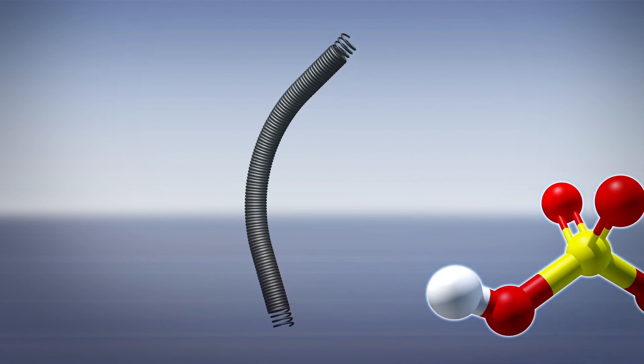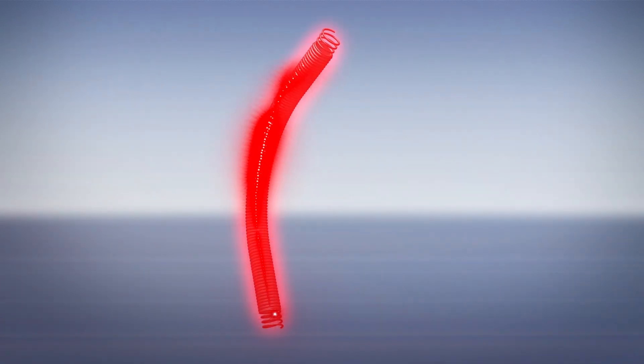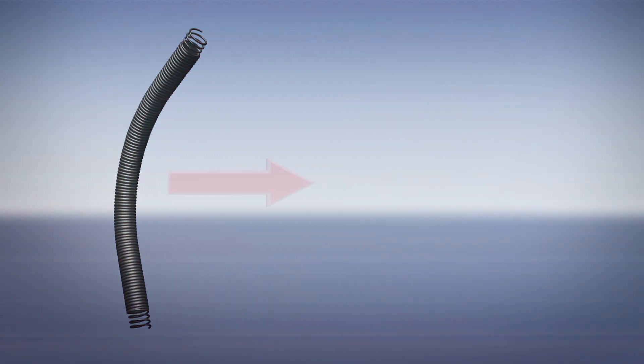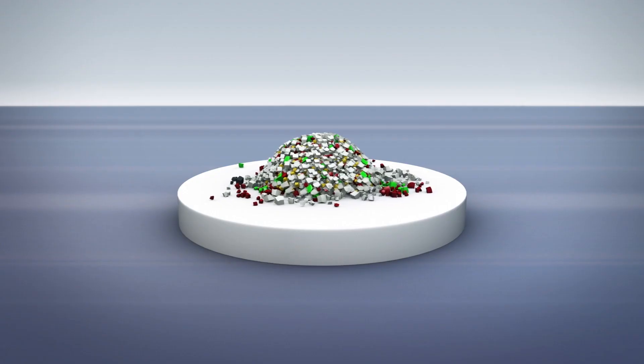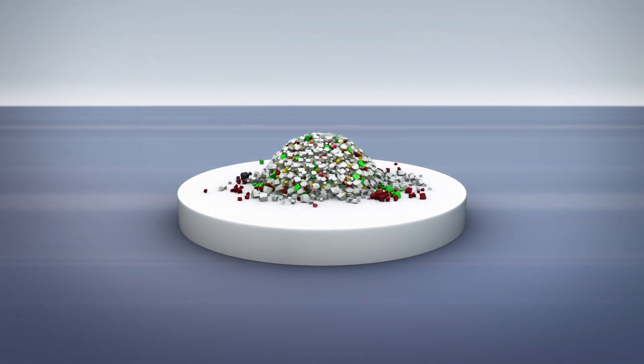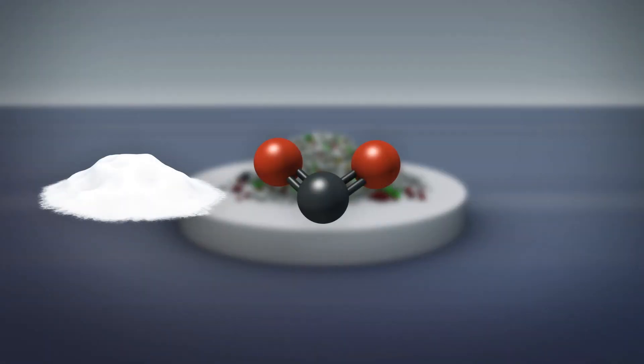The nanotubes are then mixed with peroxy monosulfate, a compound used as an oxidizing agent to generate reactive oxygen species, or chemical reactions to break down marine microplastics. The result is that the microplastics are converted into salt compounds, carbon dioxide, and water.